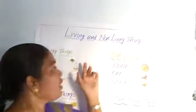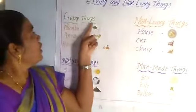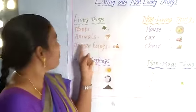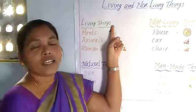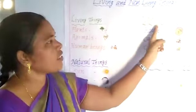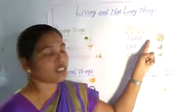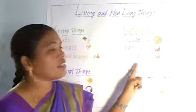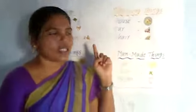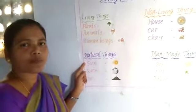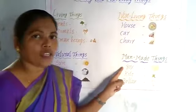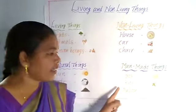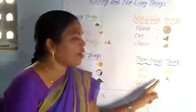So, living things are plants, animals, and human beings. Non-living things include house, car, and chair. Natural things include sun, water, and soil. Man-made things include box, kite, and balloon — these are called man-made things.